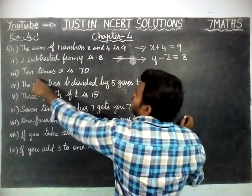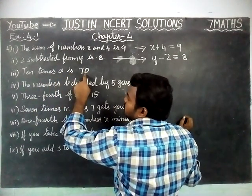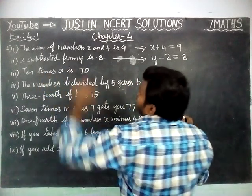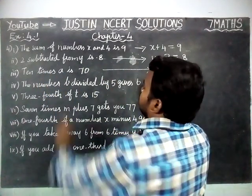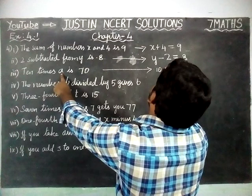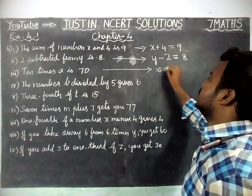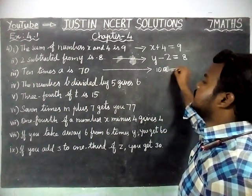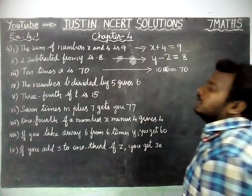Next, third question: 10 times of A is 70. '10 times' means we have to multiply. So 10 into A, which we can write as 10A. Therefore, 10A is equal to 70.